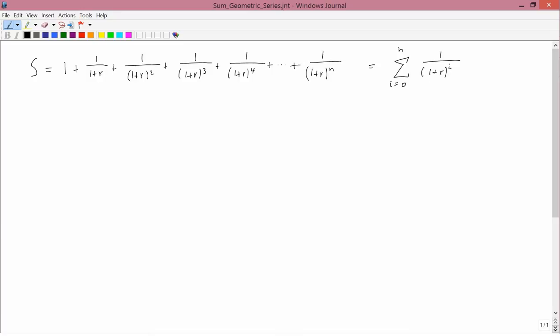The way to simplify S is to use what mathematicians call a trick, that is something which is not clear why it works, but it turns out to work. What you do is multiply the left-hand side and the right-hand side of the equation by 1 over 1 plus R. From this point on, I'm going to be ignoring the summation expression because some of you might be unfamiliar with it.